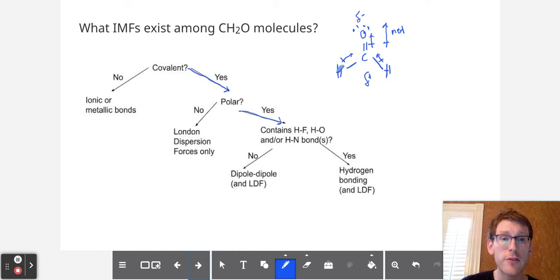This would need to be a very, very polar bond for that hydrogen to be partially positive for an adjacent molecule to attract to it. So I'm going to say no here. And that means that there are only dipole-dipole interactions and London dispersion forces, because London dispersion forces exist among all covalent compounds. LDF apply here, in addition to the dipole-dipole interactions that we get on account of this being a polar molecule.